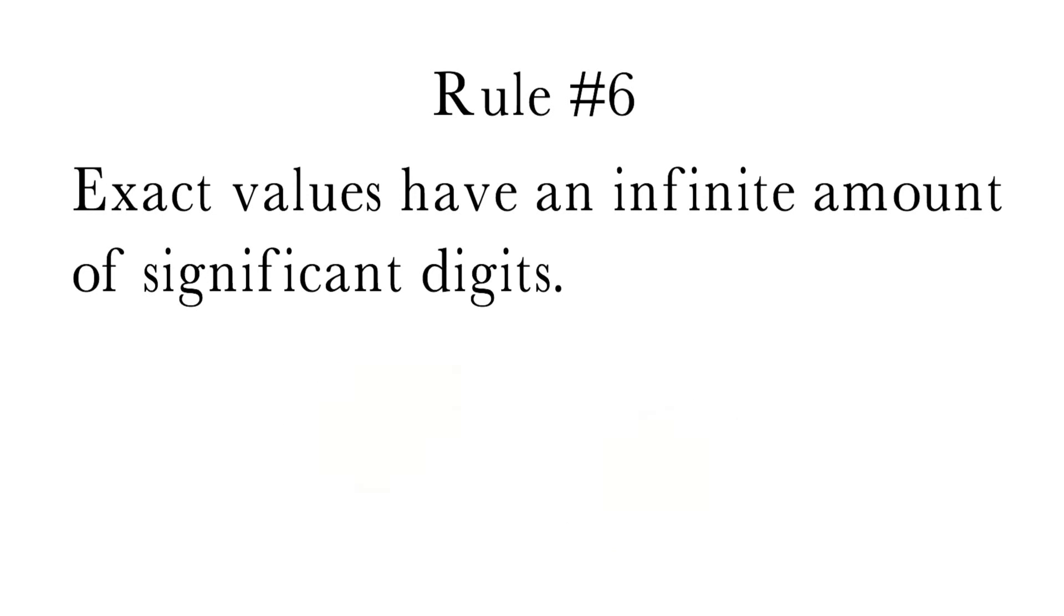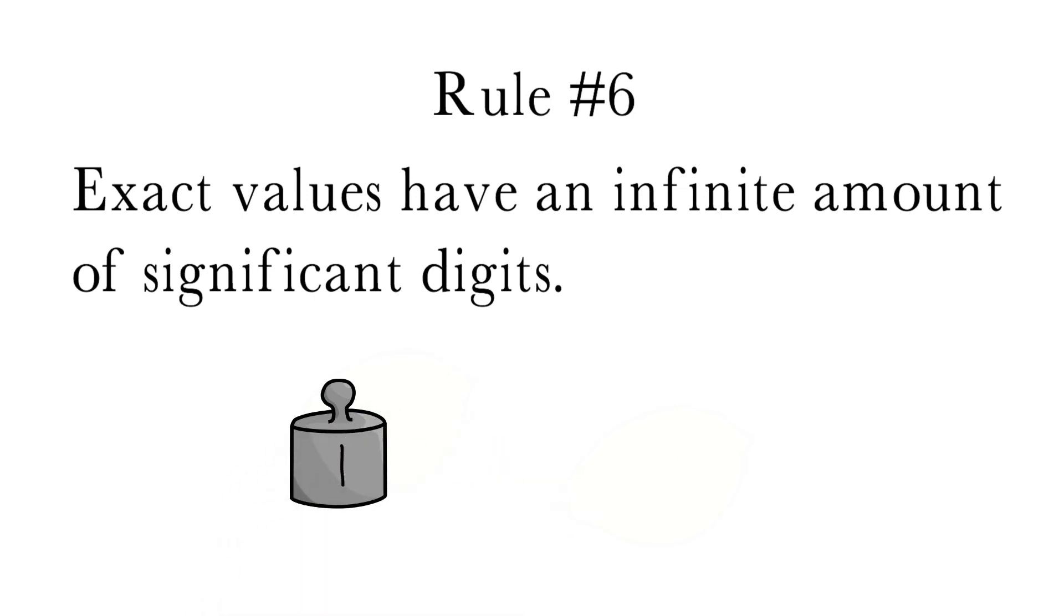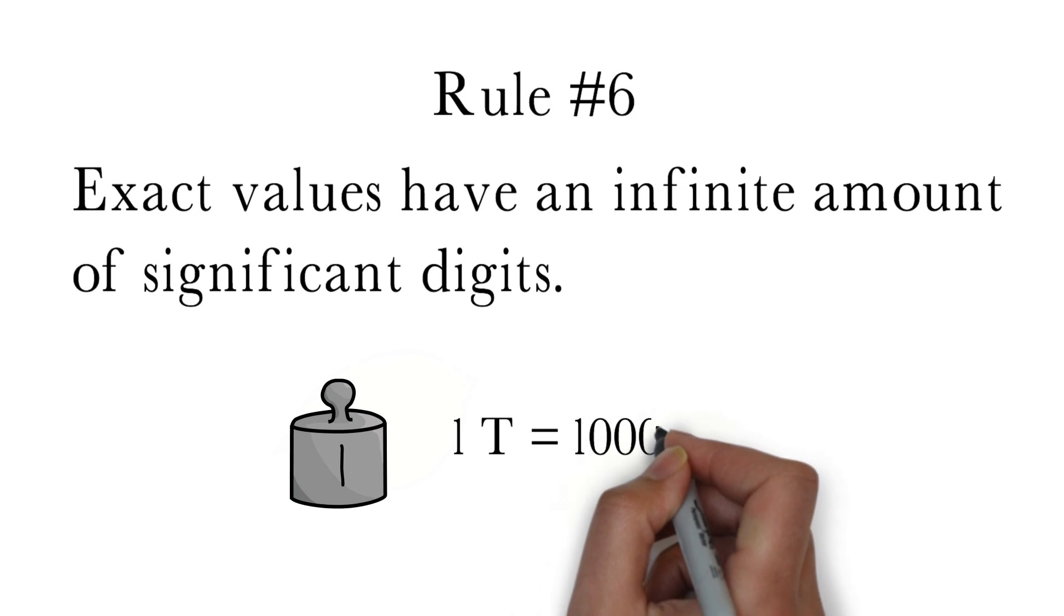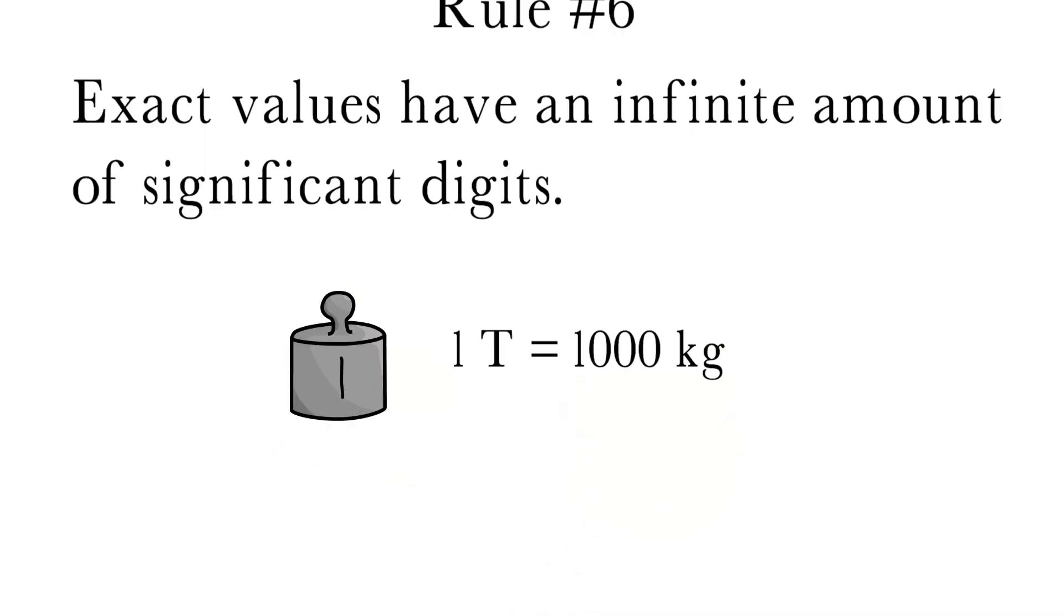Rule number six also applies to defined quantities. For example, one ton is defined to be equivalent to 1,000 kilograms, this conversion factor would also have an infinite number of significant digits.